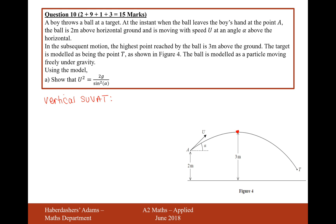Just considering the vertical components: the displacement S we want is 1 metre — we want it to be 1 metre higher than the start. The initial speed: the initial diagonal speed is U, but we're only working with vertical components, so resolving that gives U sine alpha. The final vertical speed at the highest point is 0. Acceleration is caused by gravity, so that's minus G. We're not particularly interested in the time.